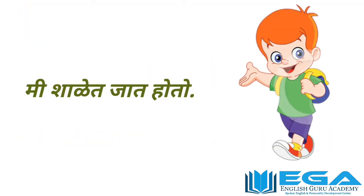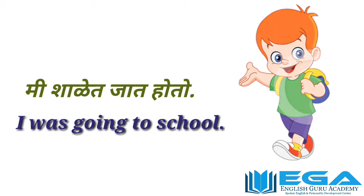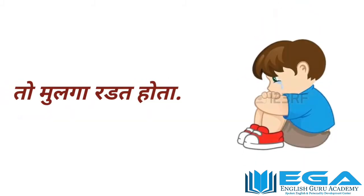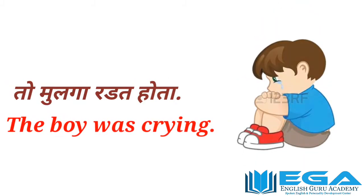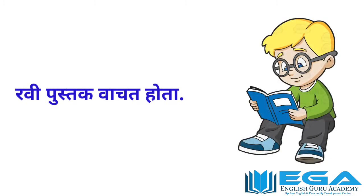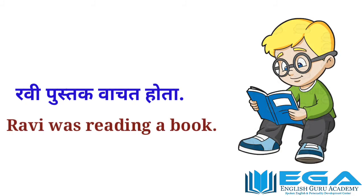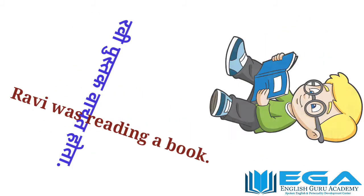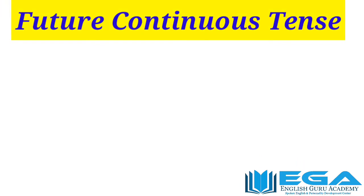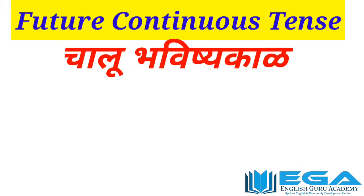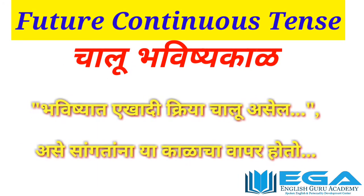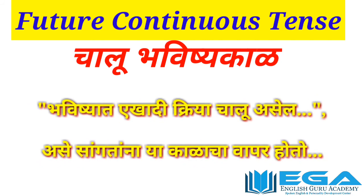Examples of past continuous tense: 'mi shalit jat hoto' — I was going to school. 'to mulga radhat hota' — The boy was crying. 'Ravhi pustak vachtat hota' — Ravhi was reading a book. Now, the last tense is future continuous tense — in Marathi, 'chalu bhavishy kaal' — used to express an action that will be ongoing in the future.